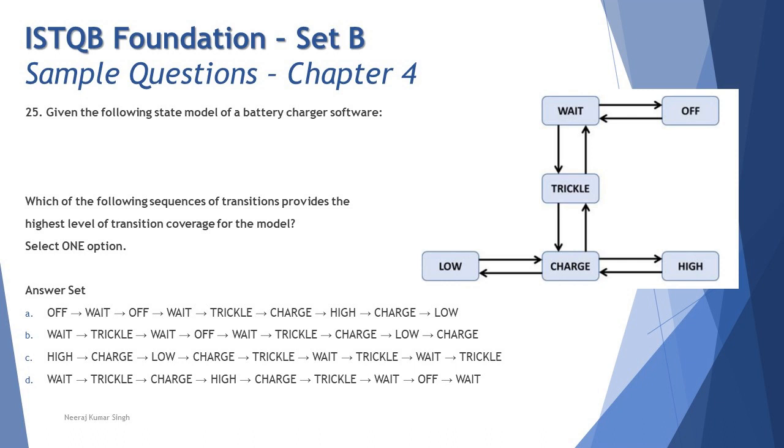Let's talk about D: Wait to Trickle (1), Trickle to Charge (2), Charge to High (3), High to Charge (4), Charge to Trickle back again (5), Trickle to Wait (6), Wait to Off (7), and Off to Wait (8). So on the entire right side, all eight transitions are covered in this path except the side on the low. Out of 10 it covers eight, thus giving us the maximum coverage.